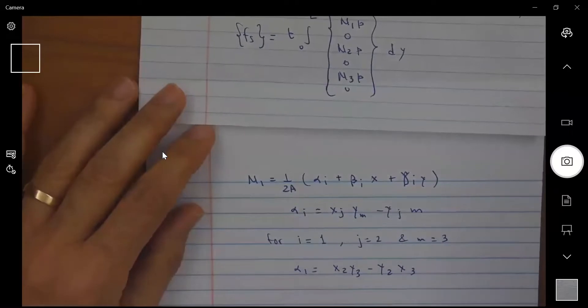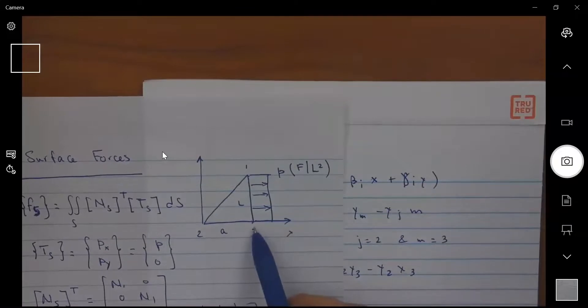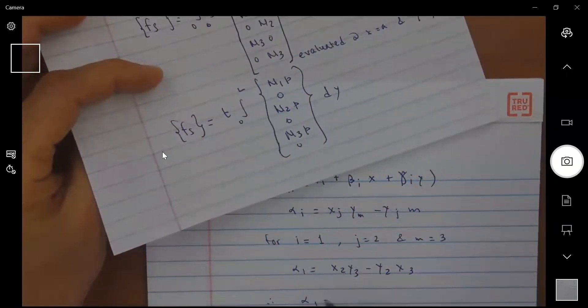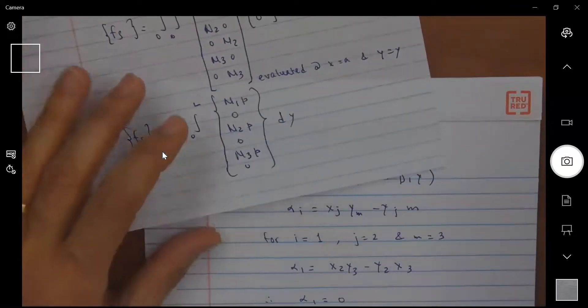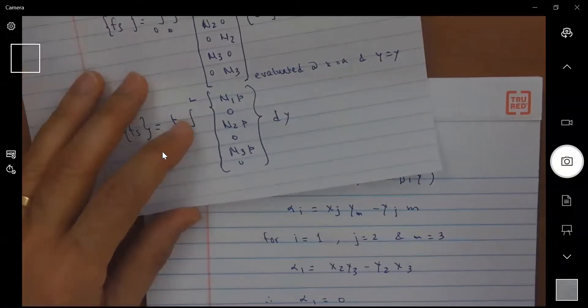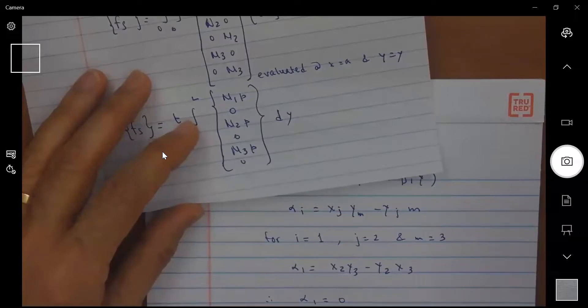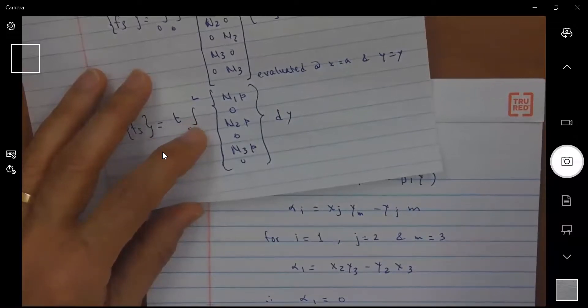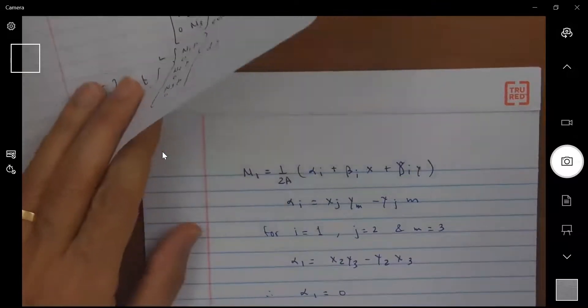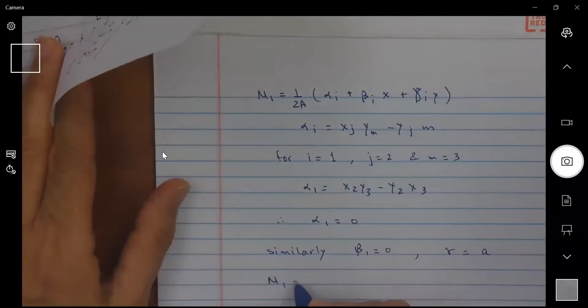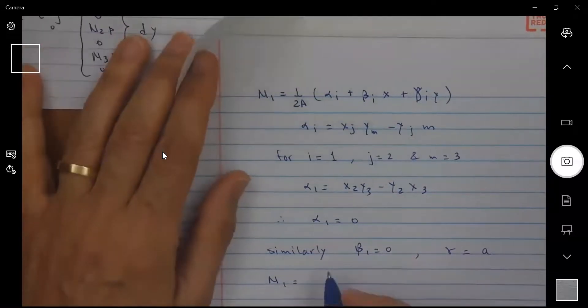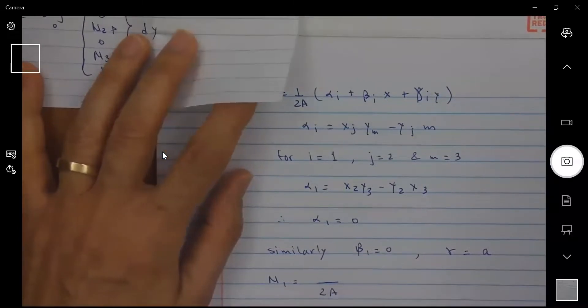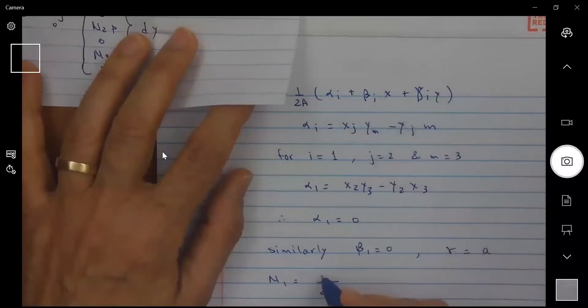If I evaluate alpha 1 looking at this triangular element, if you look at X 2 is 0 and if I look at X 3 is 0, therefore alpha 1 is equal to 0. Similarly beta 1 is also equal to 0, but gamma is equal to A. So I can write N 1 as equal to 1 over 2A, and then on the top I'm going to have A times Y.